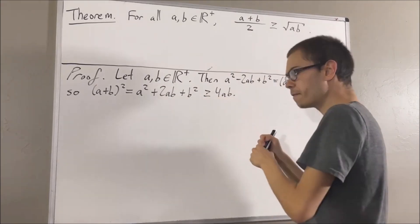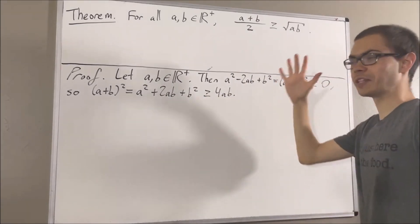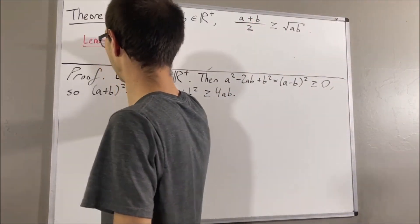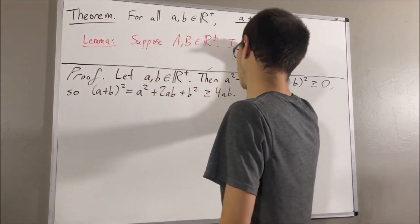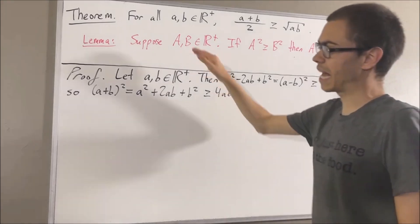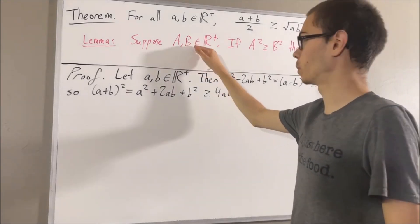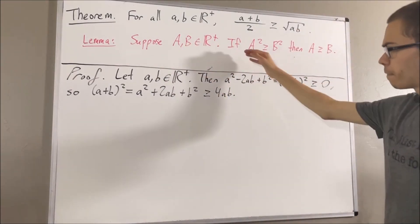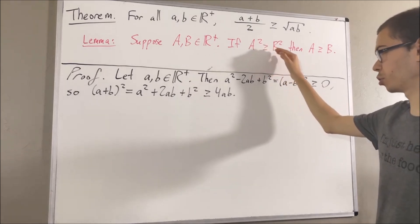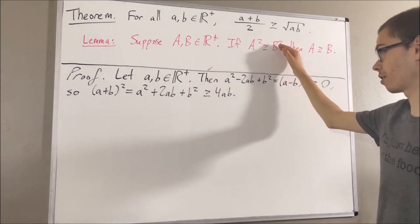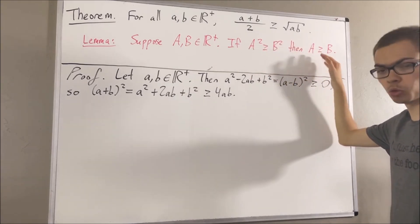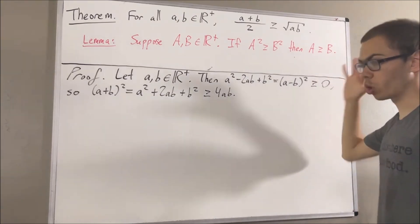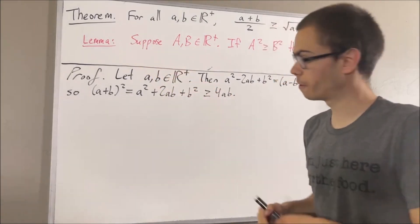Now, to proceed further, we are going to use the following preliminary result. Suppose capital A and capital B are any two positive real numbers. If capital A squared is greater than or equal to capital B squared, then capital A is greater than or equal to capital B. So, we're going to apply this lemma in our proof.